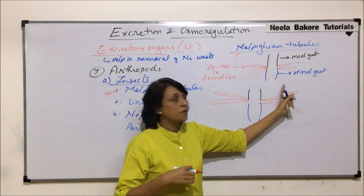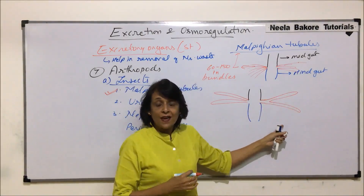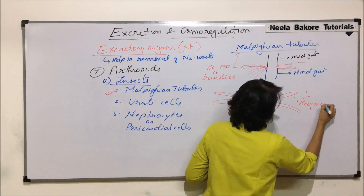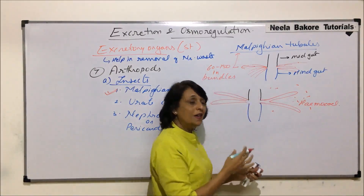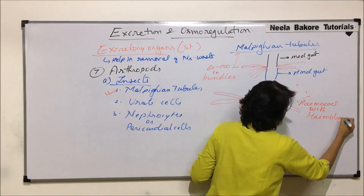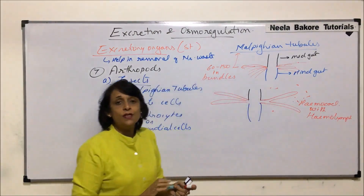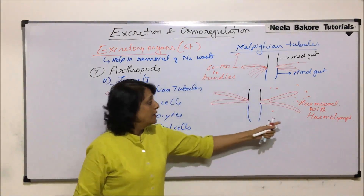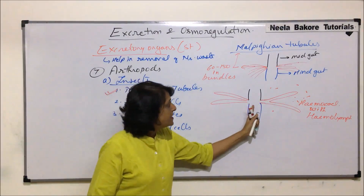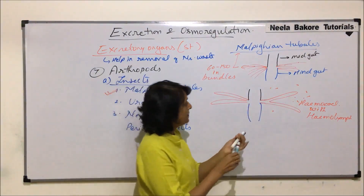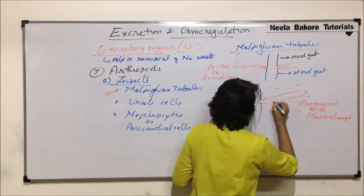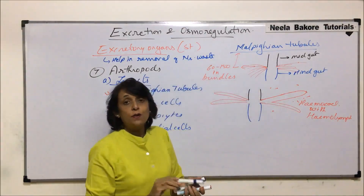The malpighian tubules keep collecting waste from the body fluid. In insects this body cavity is known as the hemocoel, which is filled with hemolymph. So malpighian tubules collect the waste from the hemolymph — the fluid in the body cavity — and remove all the waste and dump it into the alimentary canal.